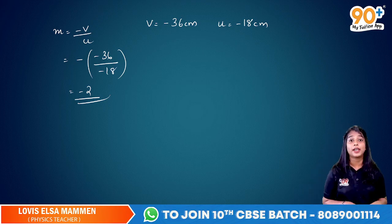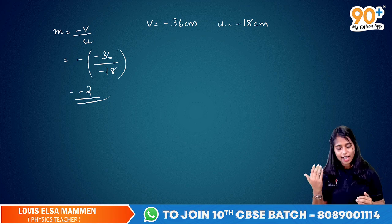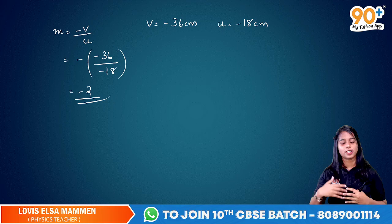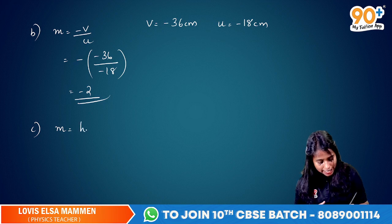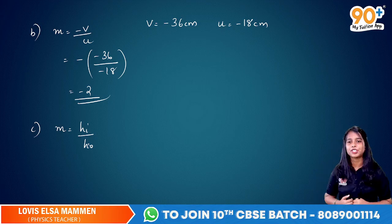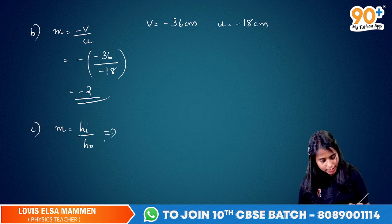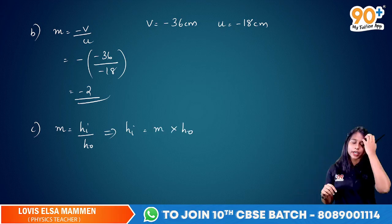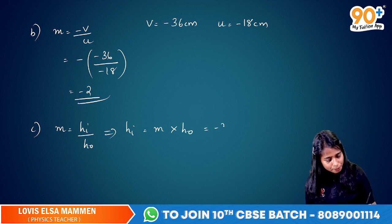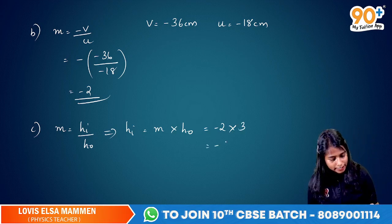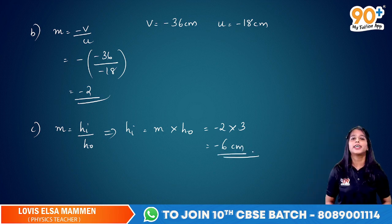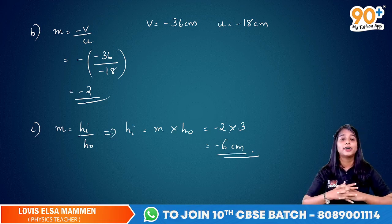Now for the third question, you are asked to find the height of the image. Using the magnification equation: M is equal to HI by HO, where M is the magnification, HI is the height of the image, and HO is the height of the object. Therefore HI is equal to M into HO. Magnification is minus 2 and the object height is 3 centimetre. Therefore HI is equal to minus 6 centimetre.